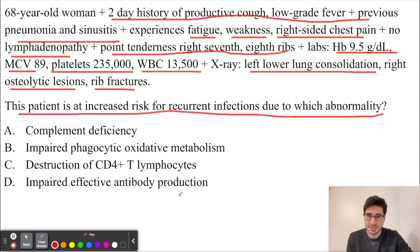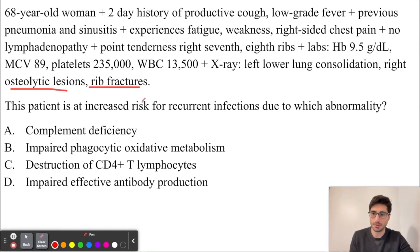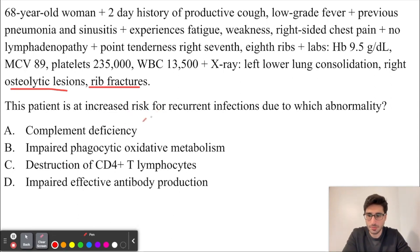This patient's presentation is going to be concerning for multiple myeloma. She's been having osteolytic lesions, rib fractures, as well as recurrent infections — all concerning for multiple myeloma. The reason why patients are at increased risk for recurrent infections in multiple myeloma is due to impaired effective antibody production.